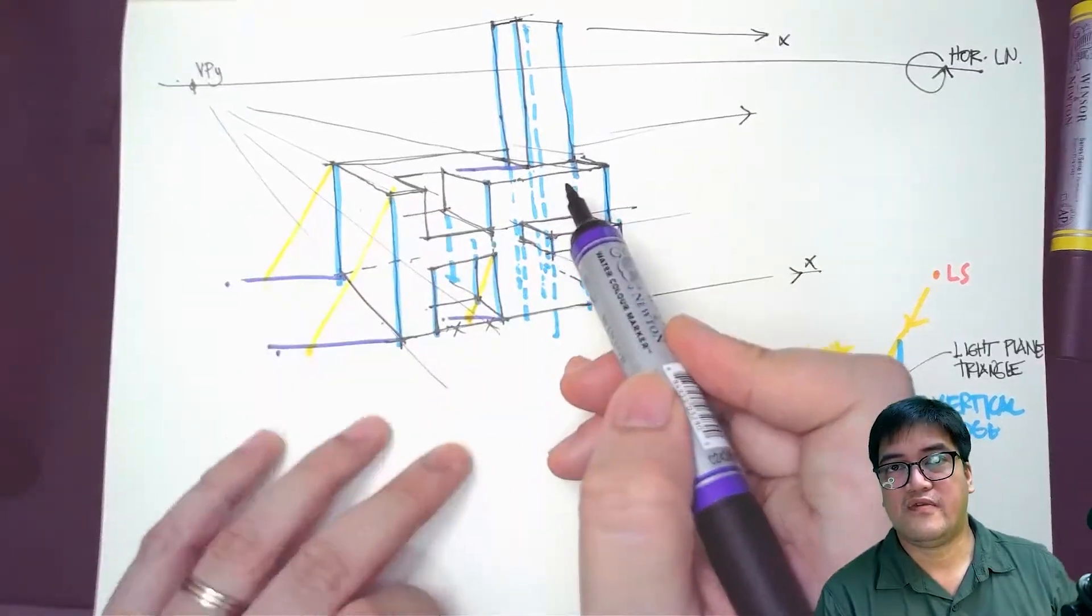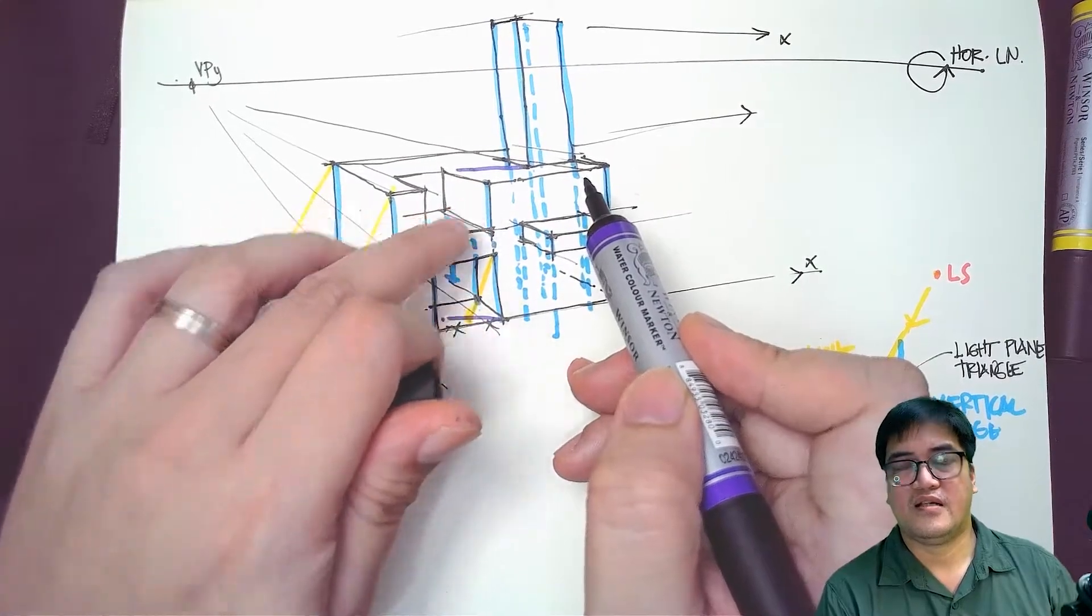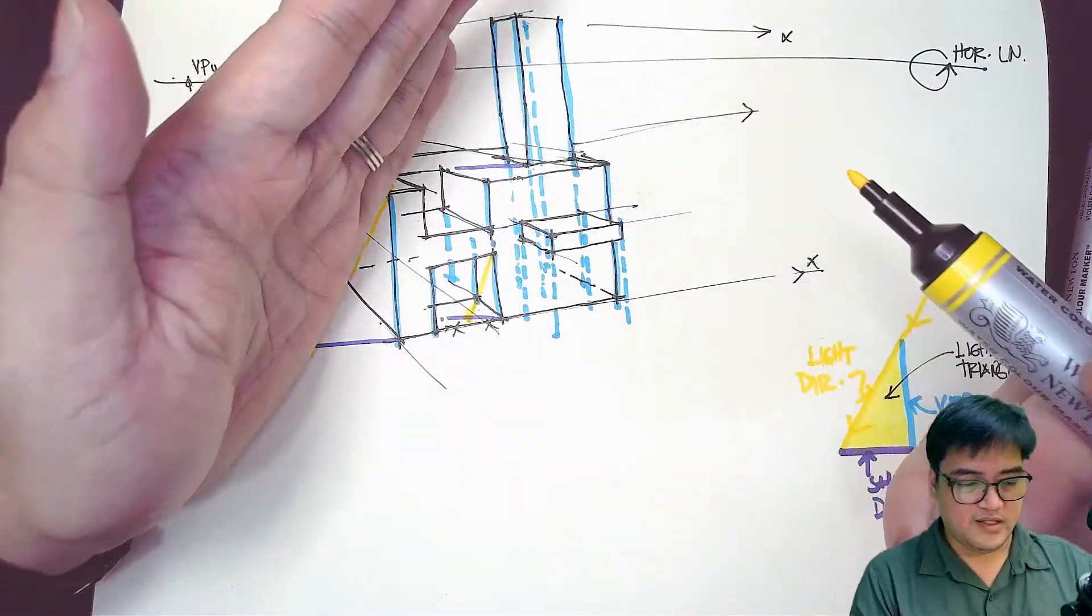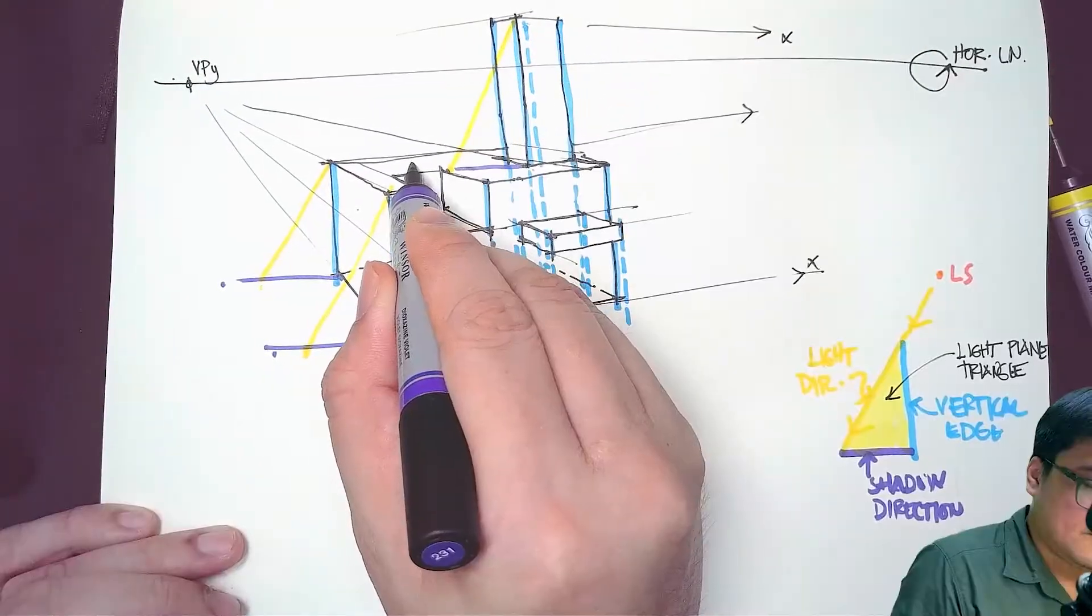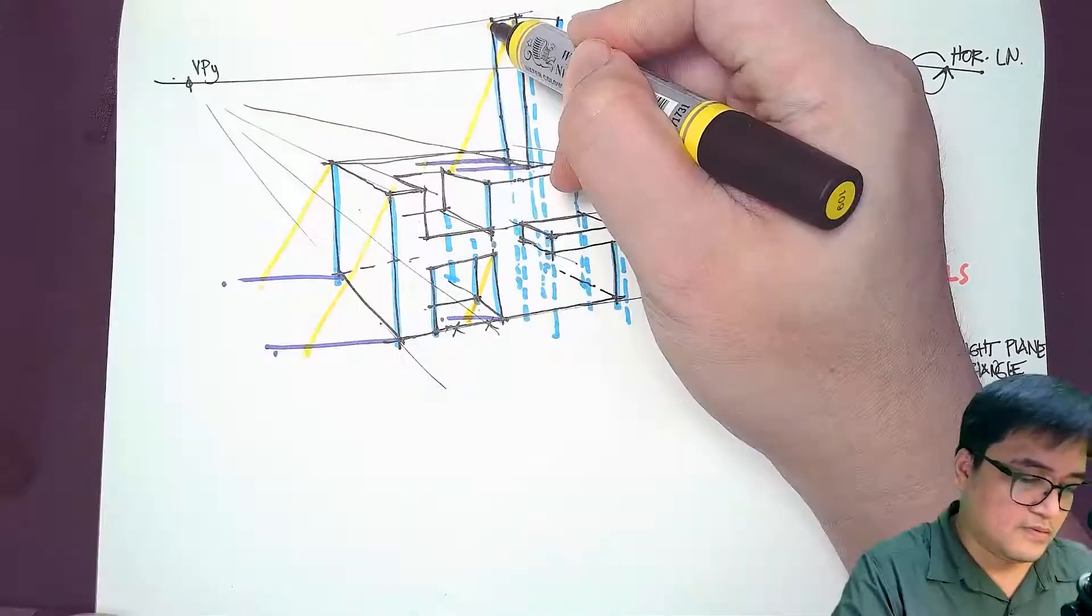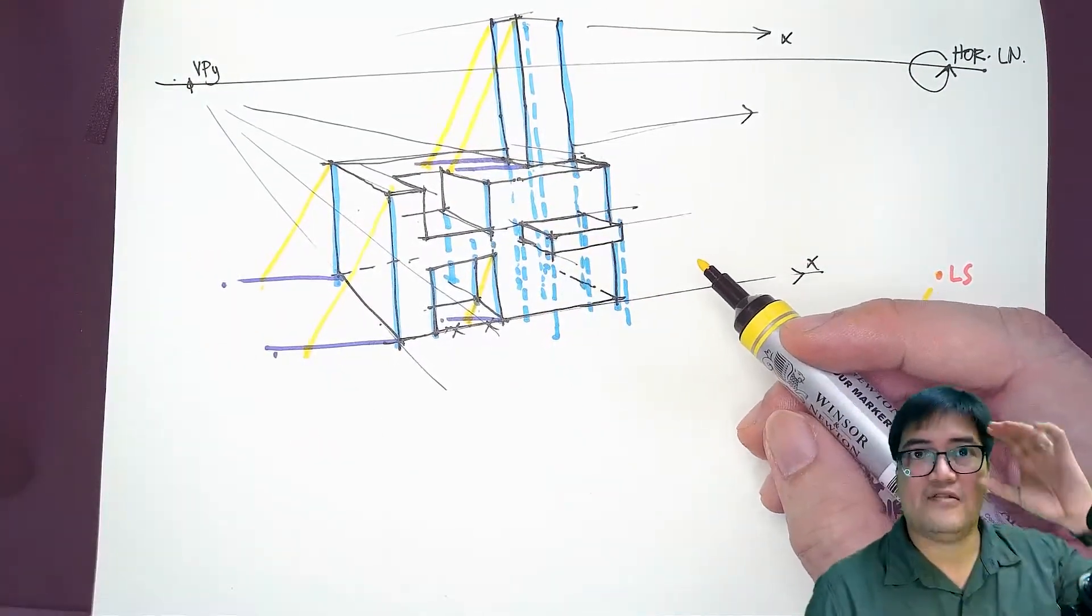Plot this same angle here. All these light direction lines are parallel to each other.